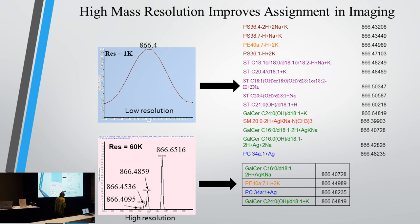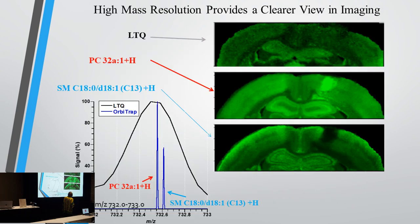Now we do a lot of imaging where we go from 15 to 40 hours depending on how much resolution we want. Another advantage of high resolution: look at this peak at 860.36 — we thought it was a single compound. But when we used high resolution, it wasn't one peak; it was one, two, three, and more. If you want to see every peak clearly, you want to use high-resolution instruments and image for a long time. That's where the AP MALDI source is of great benefit.